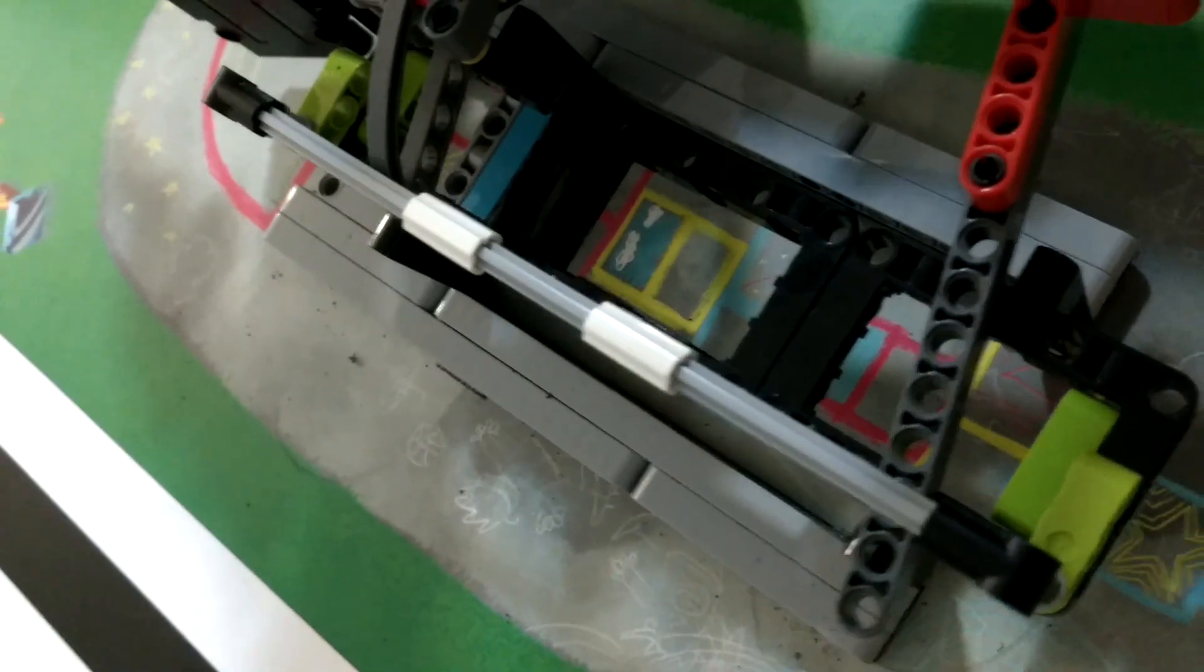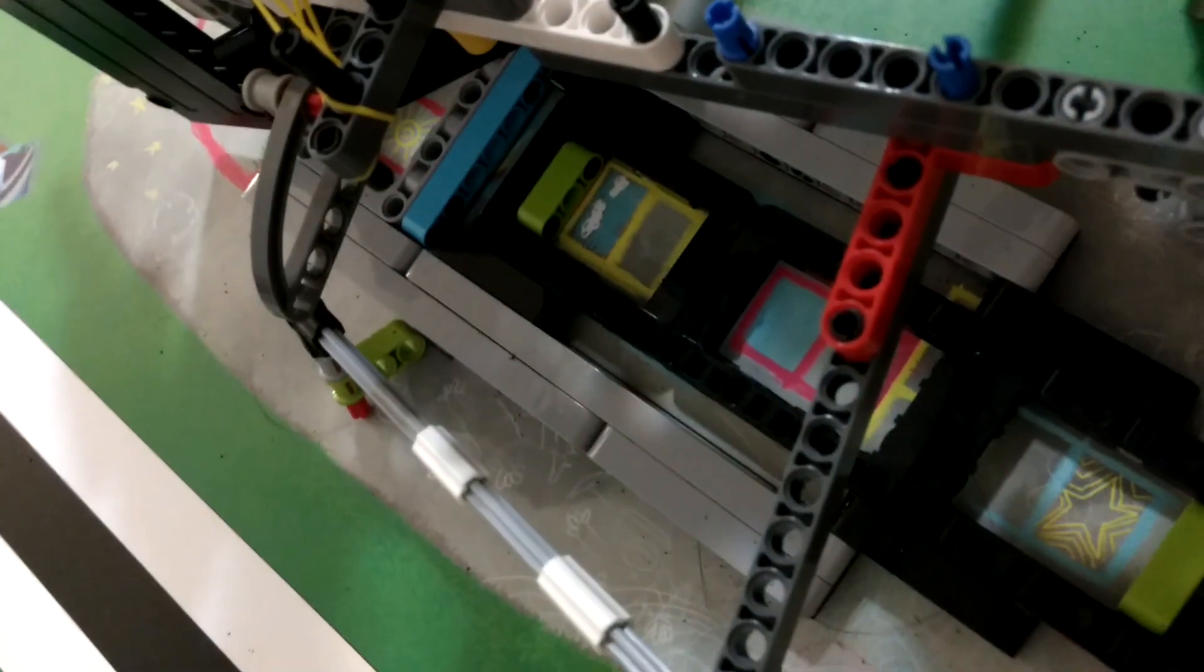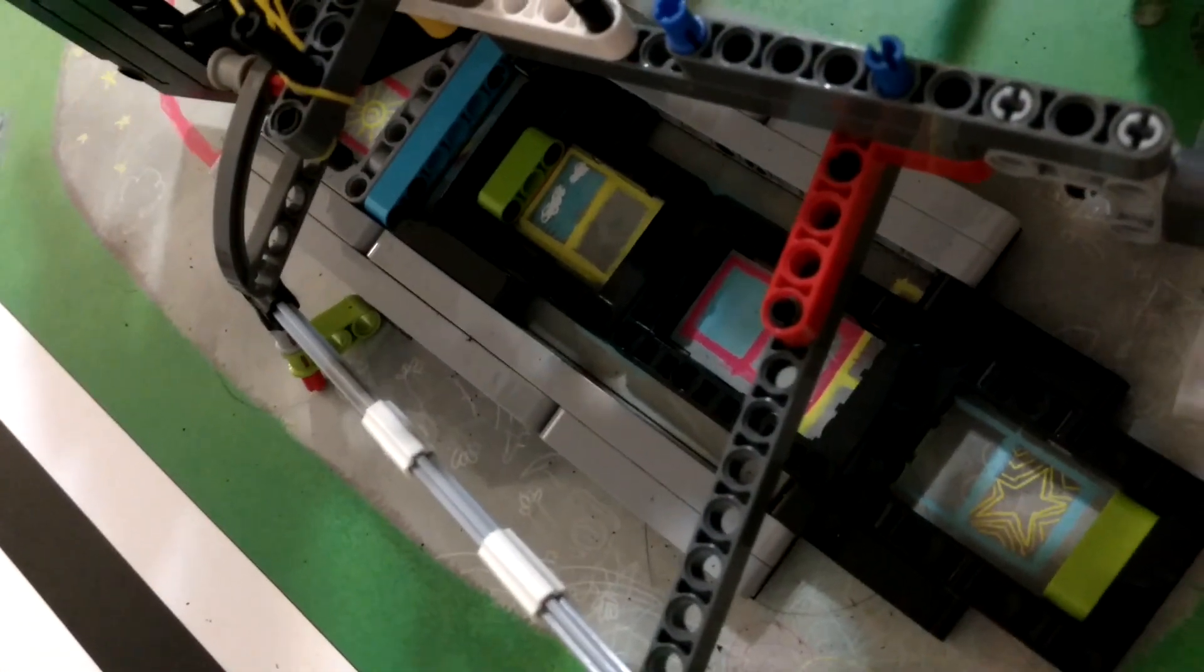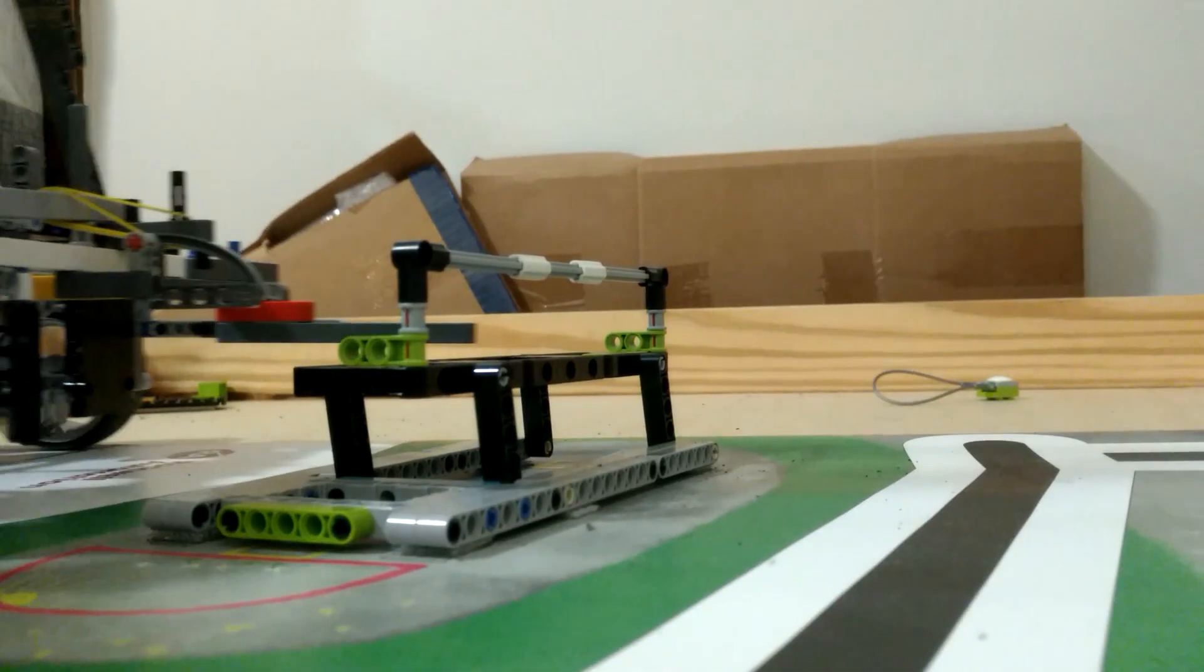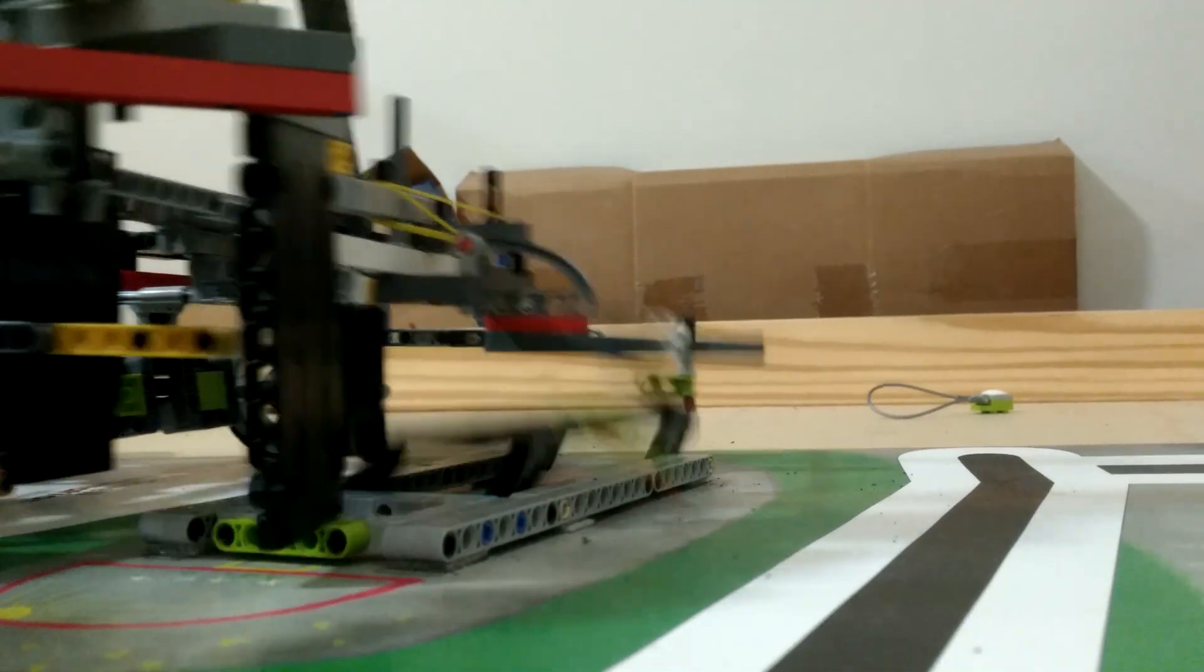Here is a demonstration of the robot flipping down the bench and lifting the backrest out at the same time. Here is the same thing happening, except from the side this time.